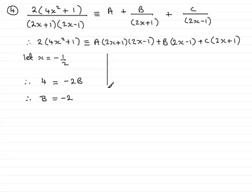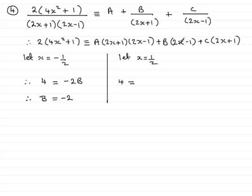Now let's pick x equal to a half, because that makes the (2x minus 1) bracket zero and also eliminates the b term. On the left-hand side: a half squared is a quarter, 4 times a quarter is 1, plus 1 is 2, times 2 gives 4. The a term goes to zero and the b term goes to zero. For the c term: 2 times a half is 1, plus 1 is 2, giving 2c. So 4 equals 2c, therefore c equals 2.